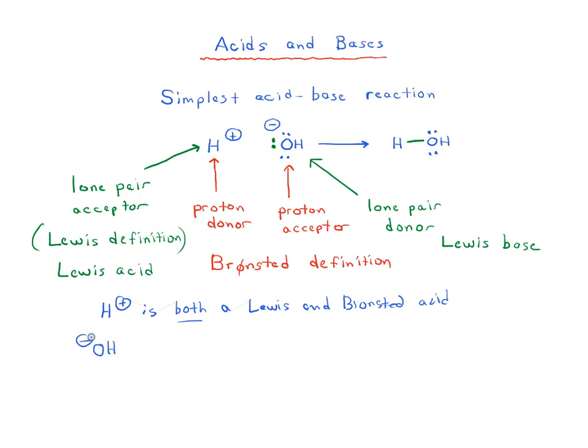And OH- is both a Lewis and Bronsted base. So you see how this lone pair on the oxygen is donated to the H+ to form a new bond. So therefore, OH can actually act as a lone pair donor or a Lewis base. So Lewis base, Bronsted base, in this example, would end up being exactly the same thing.